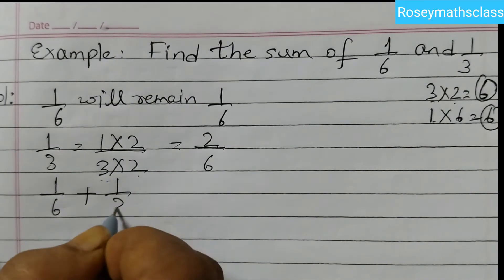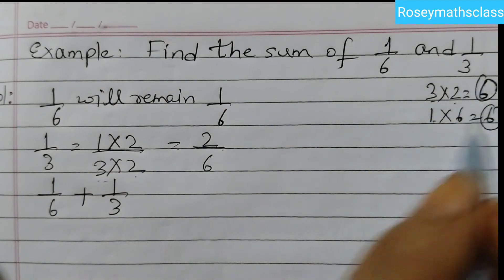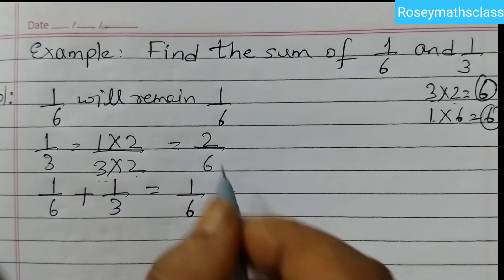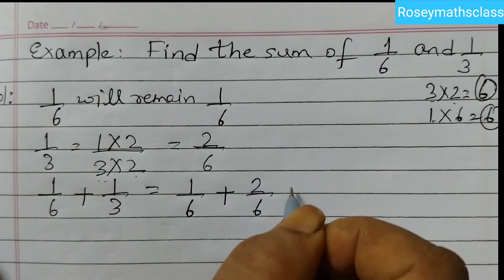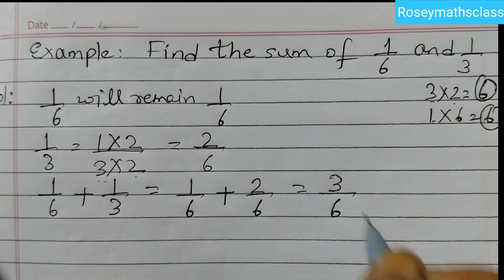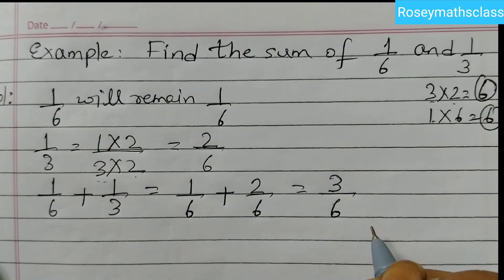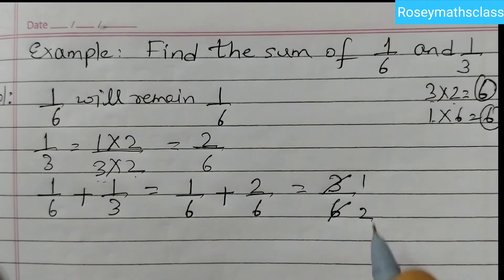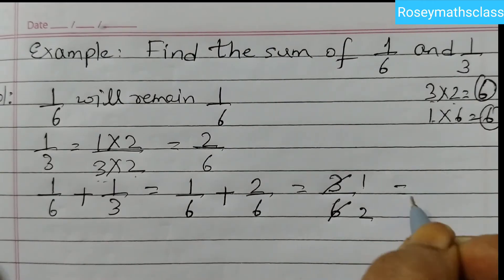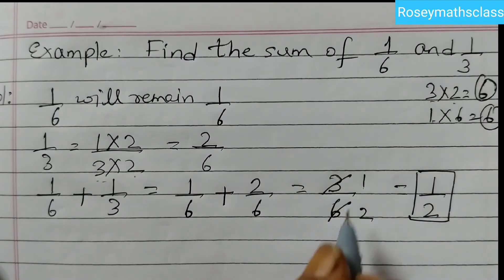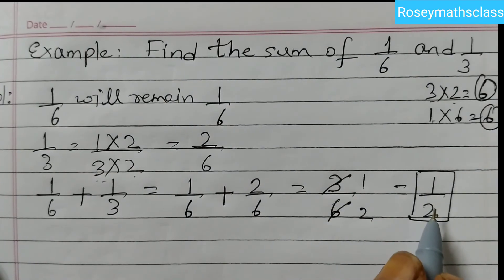So now 1 by 6 and 2 by 6. Therefore we can just add this now, 1 by 6 plus 1 by 3 is equal to 1 by 6 plus 2 by 6. Denominator remains the same, 1 plus 2 is 3, 3 by 6. Now see here, 3 by 6 can also be expressed in lowest term because 3 ones are 3, 3 twos are 6. So here the final answer would be 1 by 2. It's not 3 by 6. The answer is 1 by 2.